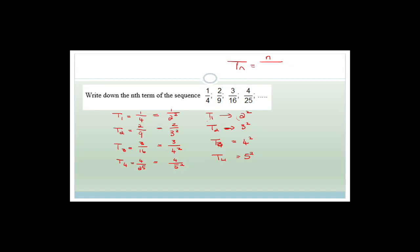Therefore the denominator would be (N+1) squared. So the fifth term would be T5 over 6 squared, which would be 36. That's how you break these down and see a pattern — just ask what can I do about the numerator, what can I do about the denominator, and you'll find it.